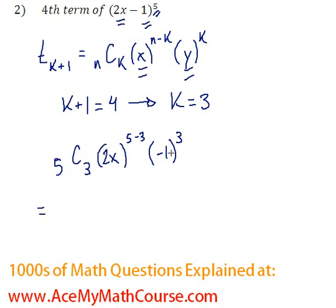Great, so 5C3 is 5 factorial over 3 factorial, 2 factorial. Again if you have any problems with that, 5C3, please go to our website and check out combinatorics.